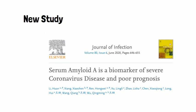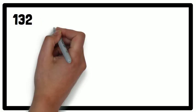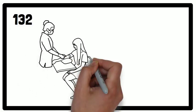In a new study called Serum Amyloid A is a Biomarker of Severe Coronavirus Disease and Poor Prognosis, data was collected from 132 COVID-19 patients that were admitted to the hospital.